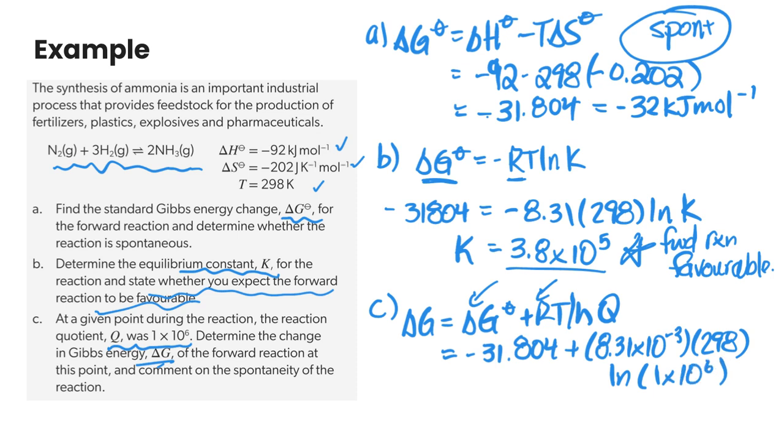And if we do that math and we round that off to sig digs I get 2.4 kilojoules per mole. And so because the delta G at this point is positive, it means at this point in time it is a non-spontaneous reaction.